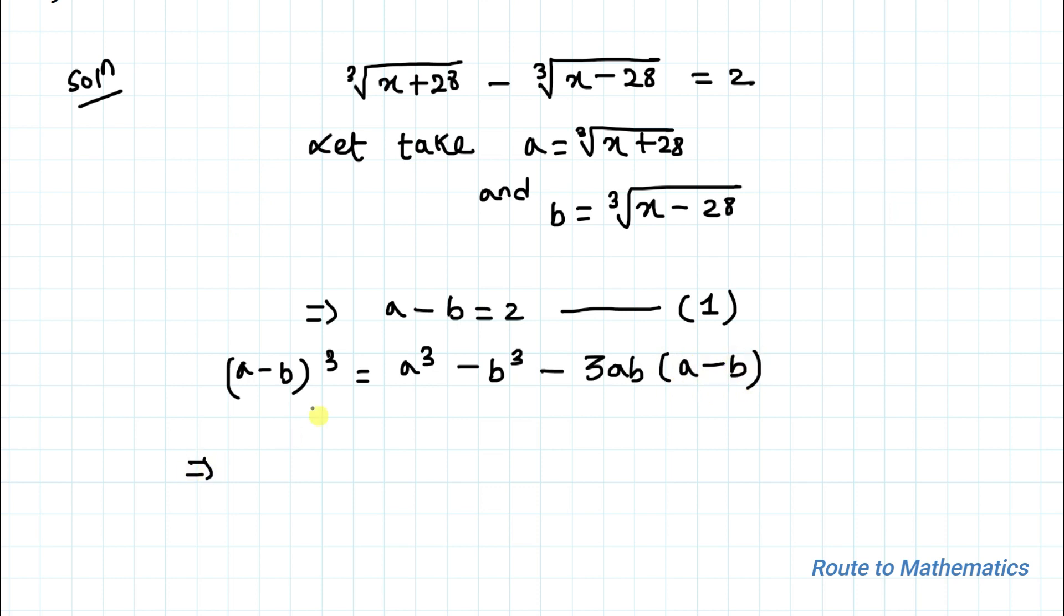This implies from equation 1 we have a minus b equals 2. Let's put the value here. So we have 2 cube equals, and we have taken a cube as cube root of x plus 28. Let's just put the value here.